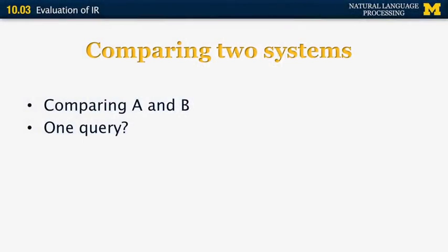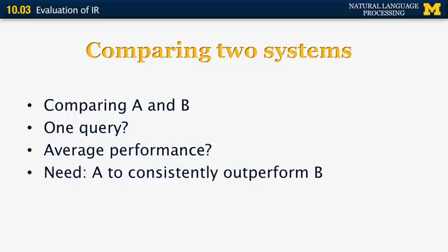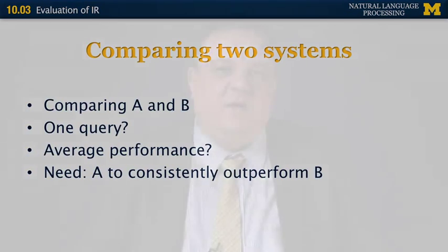Now let's see how we can compare the performance of two systems. Suppose one system gives an F-measure of 60% and another gives 65%. Can you claim the second system is better? We clearly cannot do this over one query because with a single query, it's completely possible that one system just happens to do well and the other fails. Instead, we need to find the average performance over many queries, or better yet, ensure that on every query one system consistently outperforms the other. One common method used is the sign test.